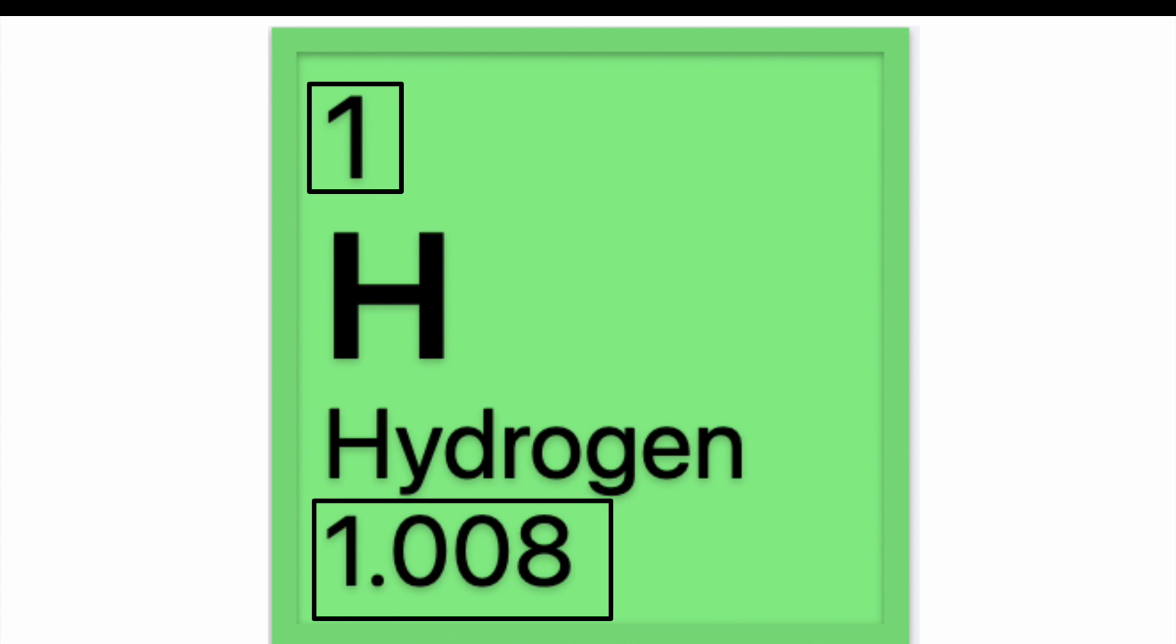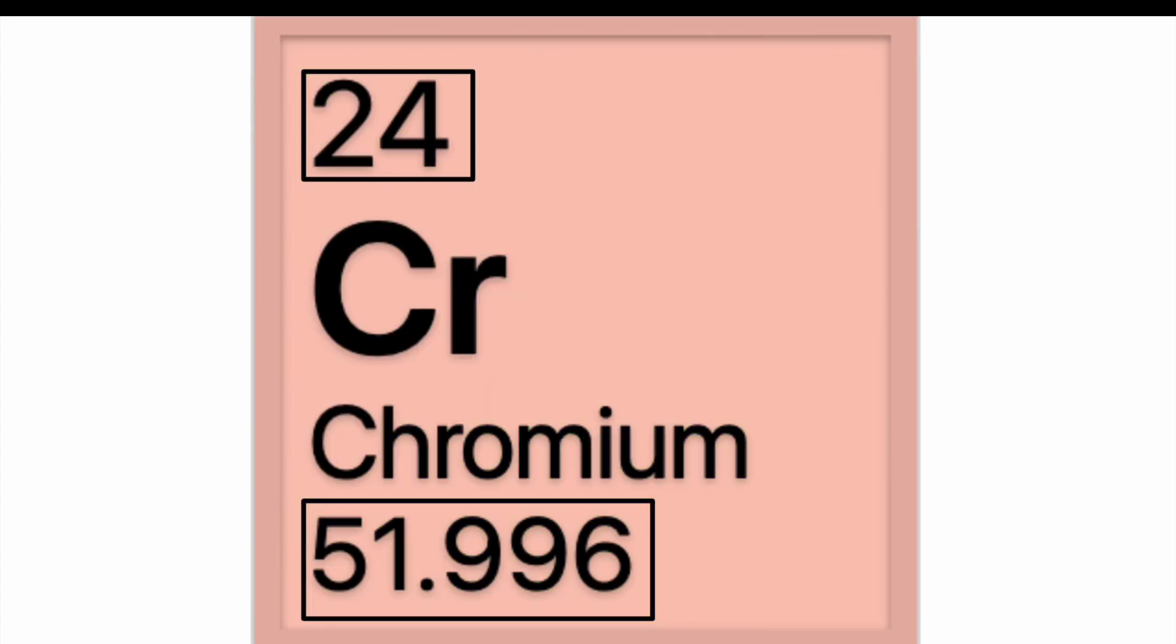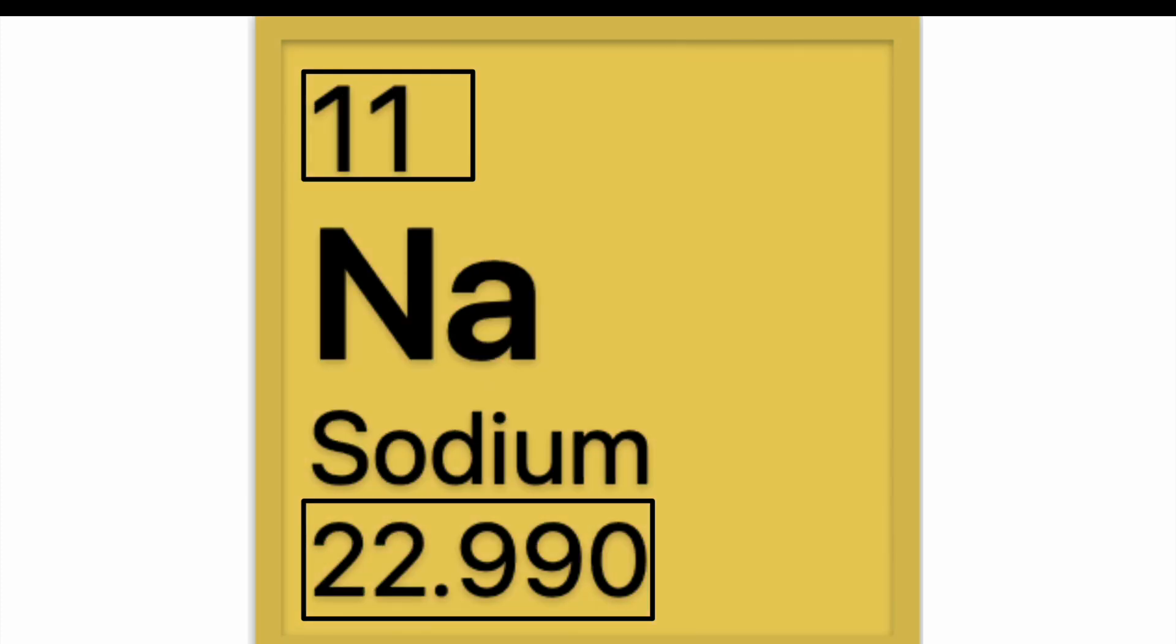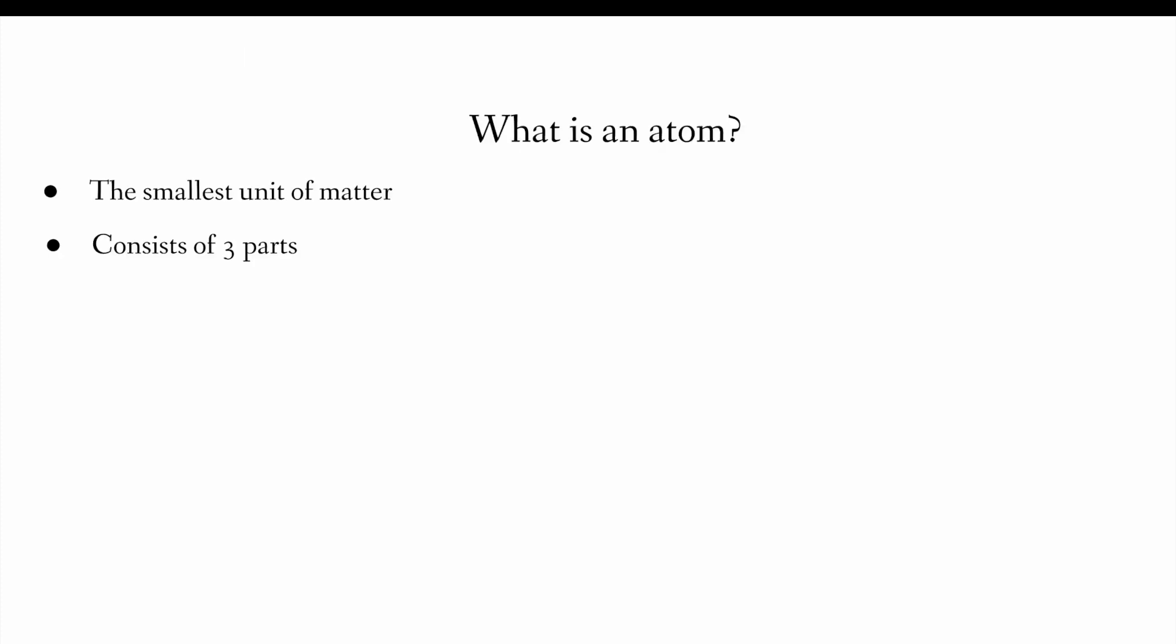And now let's talk about these boxes, right? So, when you look at these boxes, they are found on every single element found on the periodic table. But once again, we have to understand what is an atom and those three parts again, right? So, protons.